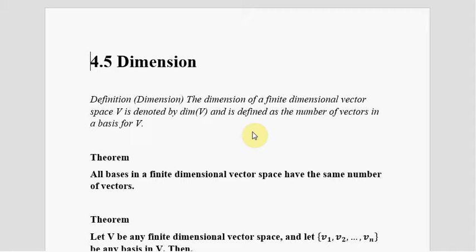Theorem: All bases in a finite dimensional vector space have the same number of vectors. So if you're in R3, then the basis would form a set of three vectors. You can have different vectors for that basis, but the number of vectors for the basis would always be the same. If it's R2, you expect two vectors. R4, you expect four vectors in that basis.